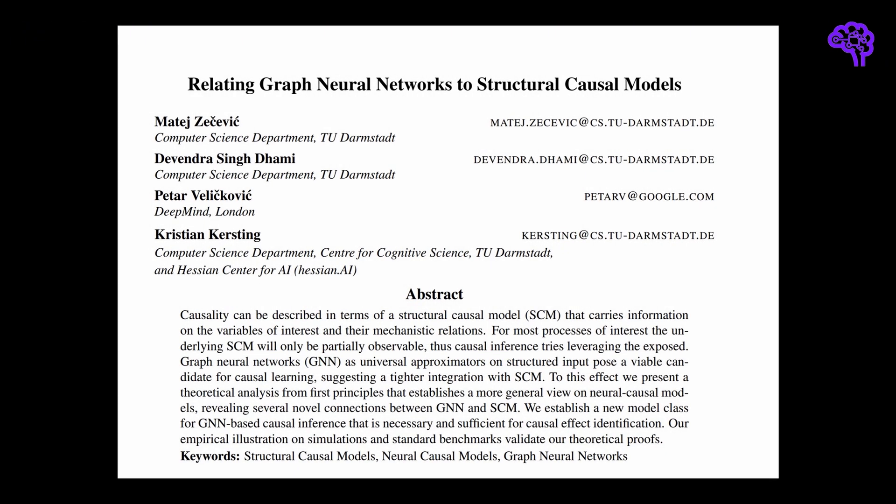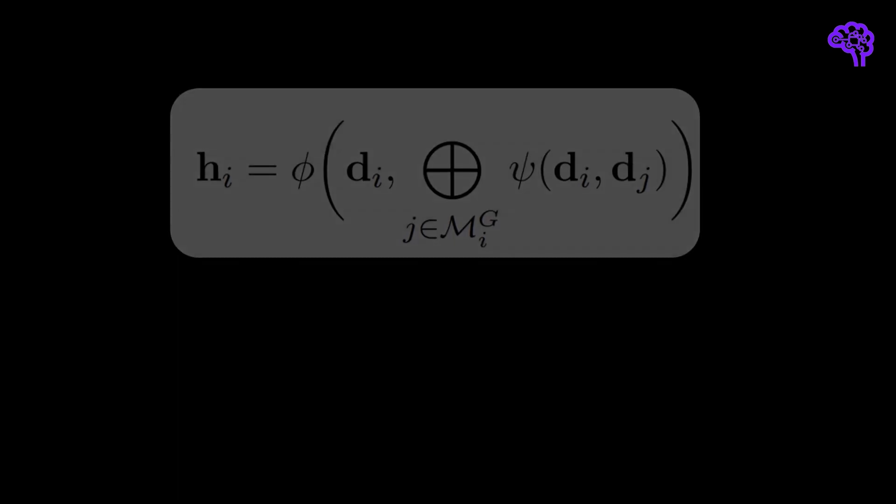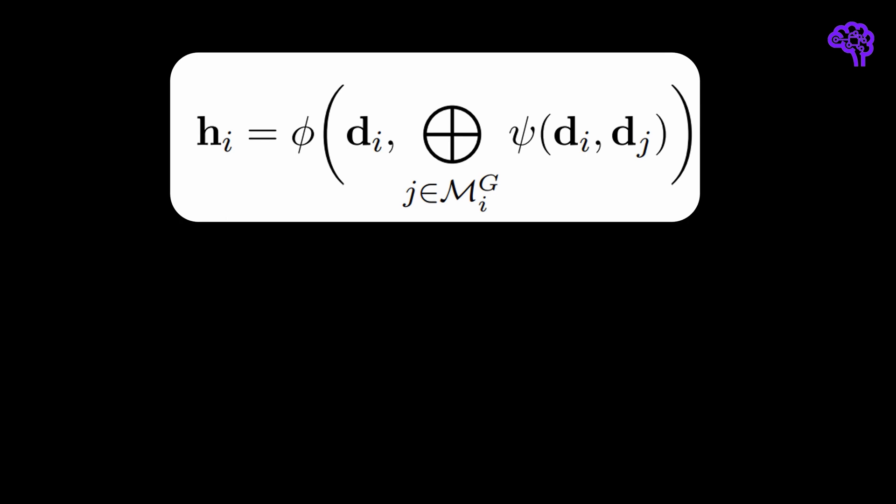The main focus for this video is the paper called Relating Graph Neural Networks to Structural Causal Models by Sechevich, Dami, Velichkovich, and Kerstin. For the following, I assume that you are familiar with graph neural networks. The basic idea is to introduce the concept of interventions in GNNs to jointly learn embeddings and causal effects. This is implemented through so-called interventional GNN layers.